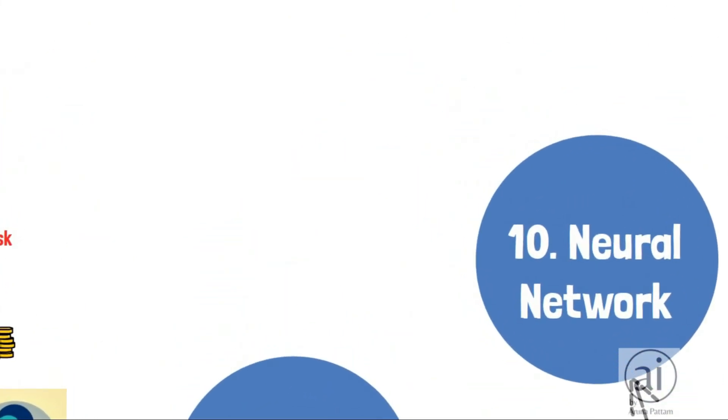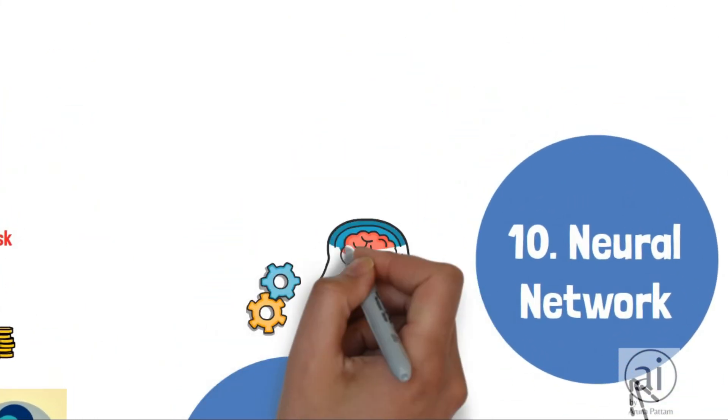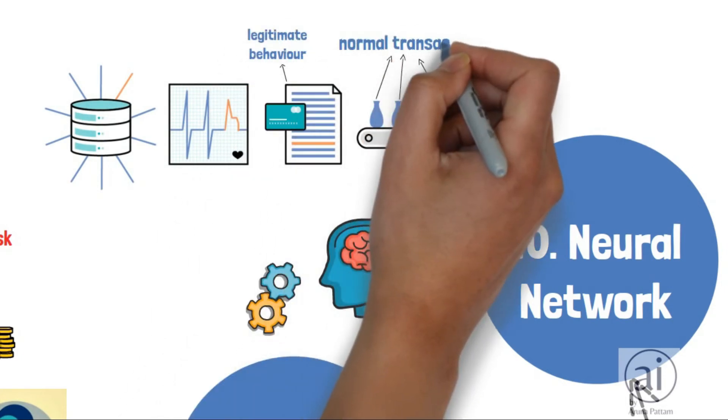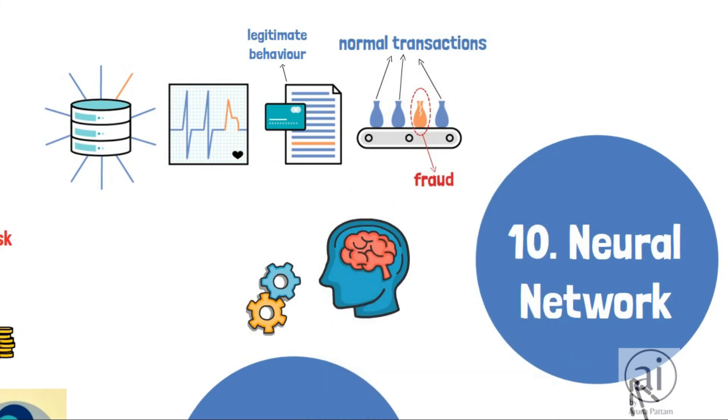Neural networks are modeled based on the human brain. They learn from patterns on legitimate behavior, can adapt to the change in the behavior of normal transactions, and identify patterns of fraud.